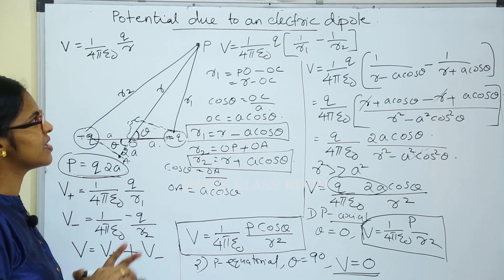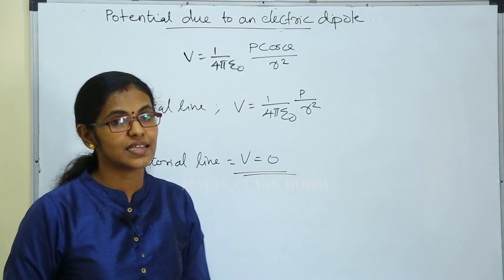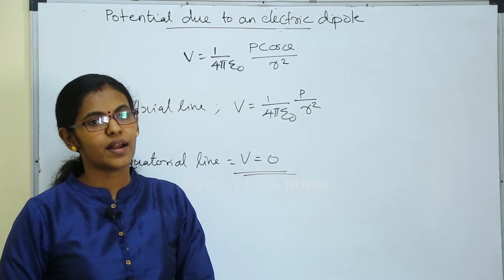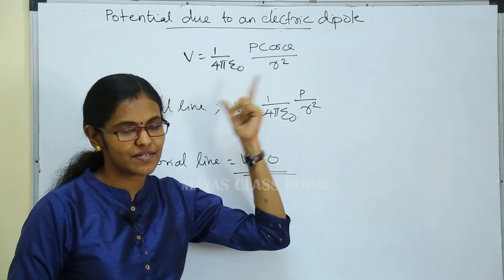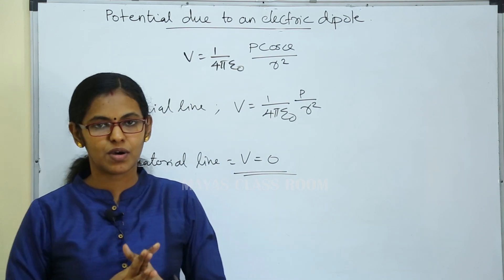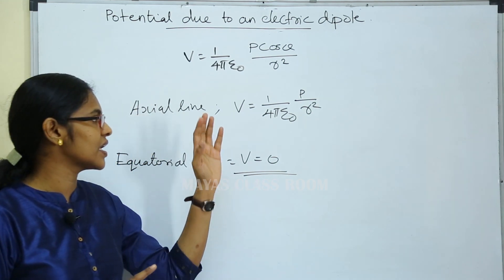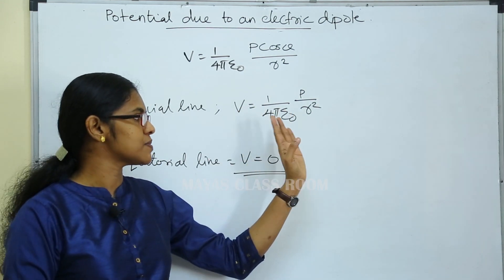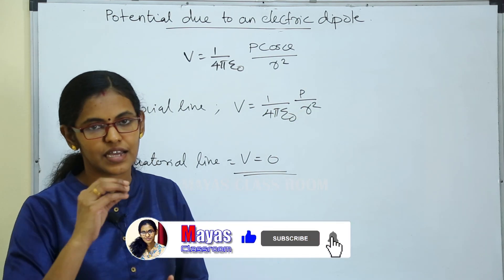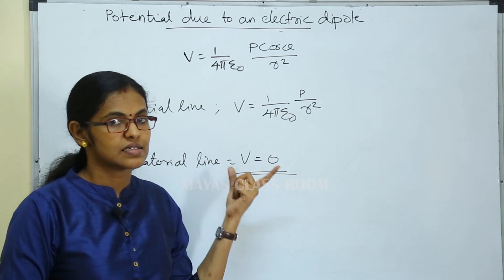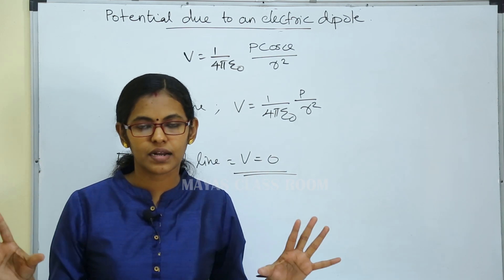This is the electric potential due to an electric dipole. We discussed the general expression V equals 1 by 4 pi epsilon 0 times p cos theta divided by R squared. On the axial line, V equals 1 by 4 pi epsilon 0 times p divided by R squared. On the equatorial line, the potential is zero.